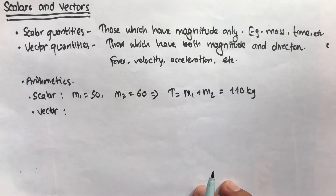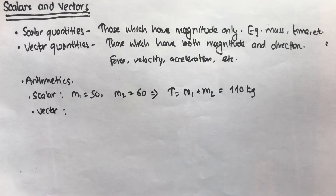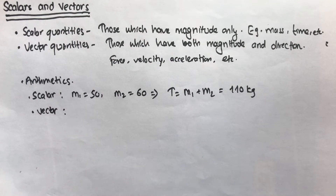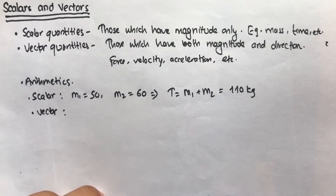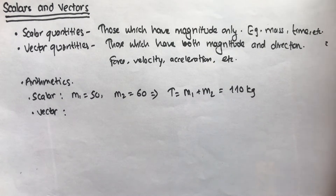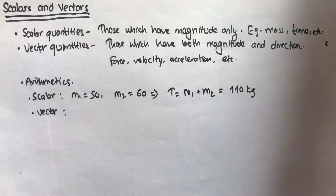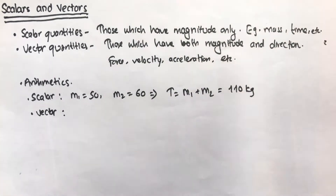In vector arithmetic, we're going to talk about adding and subtracting coplanar vectors. Coplanar vectors are vectors lying in the same plane. To study vector arithmetic, let's first learn how vectors can be represented — I'm going to bring a graph paper here.